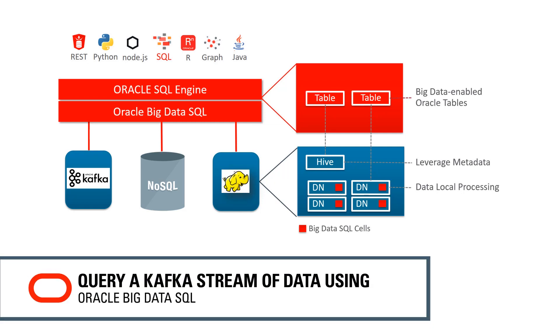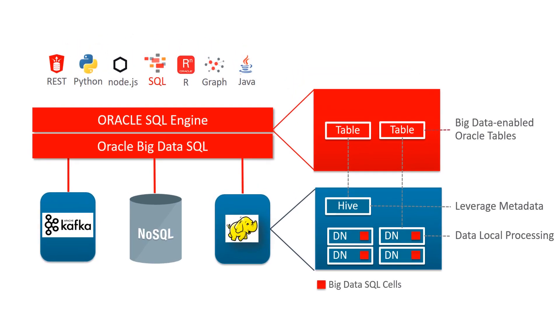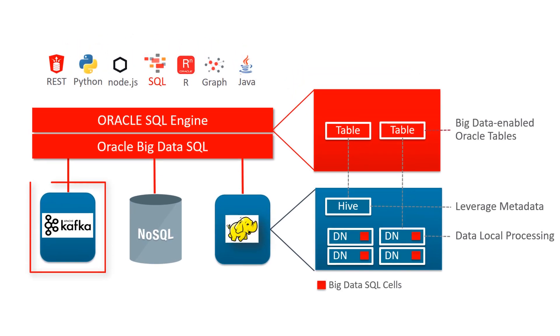In this video, we are going to use Big Data SQL to access a Kafka stream of current bike activity at NYC City Bikes in order to perform some real-time analysis.